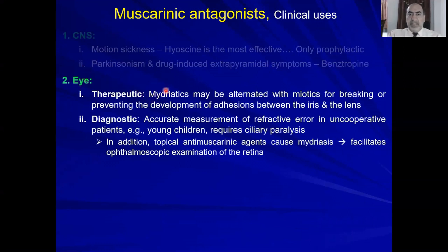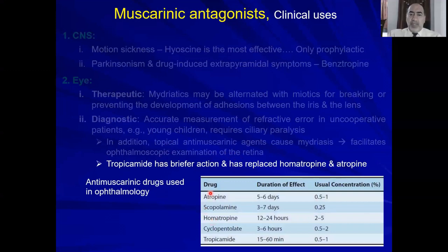On the level of the eye: mydriatics may be used along with miotics to break adhesions between the iris and the lens. For diagnostic purposes — the most common ophthalmic use — measurement of refractory error in uncooperative patients such as children requires ciliary paralysis. Mydriasis also facilitates examination of the retina. However, atropine's action lasts about a week, so short-acting drugs were developed: homatropine, and especially cyclopentolate (duration 3–6 hours) and tropicamide (less than one hour), allowing patients to regain normal vision much sooner.